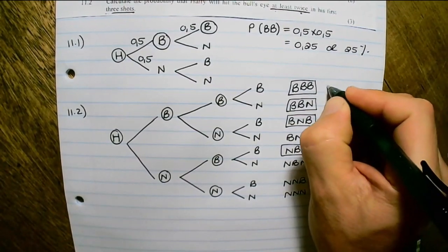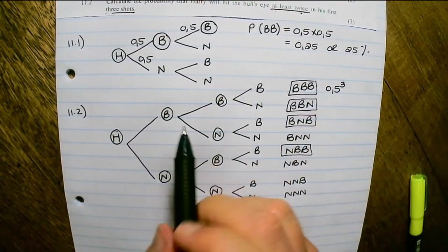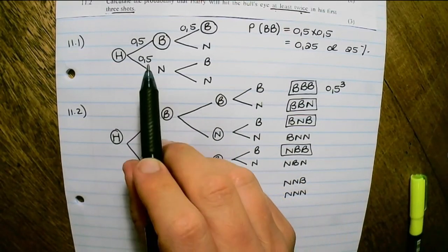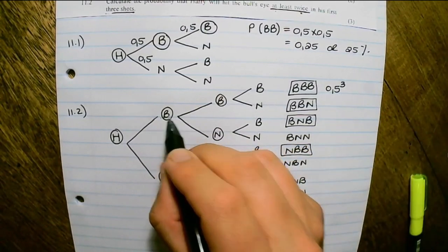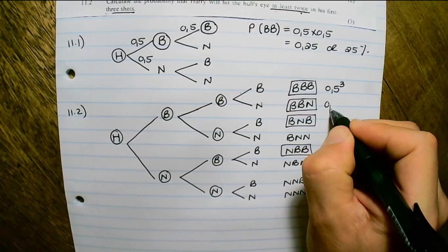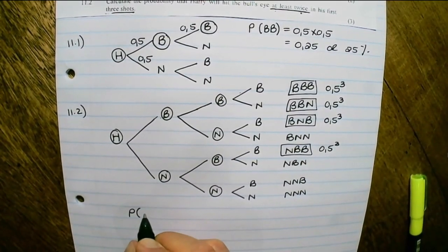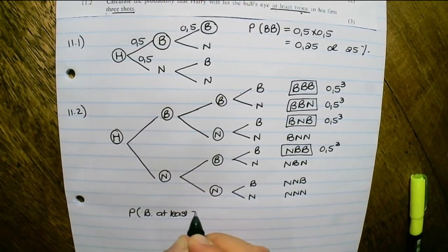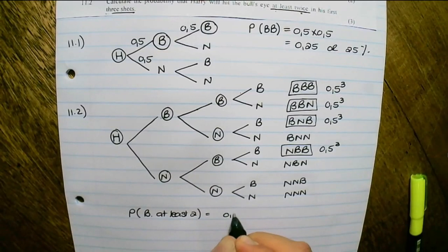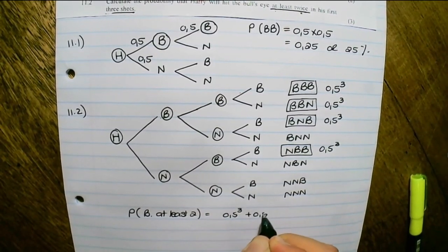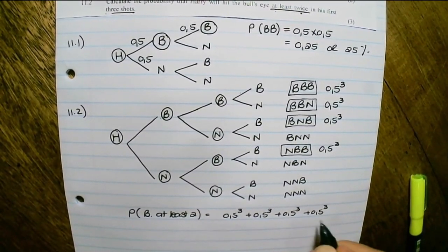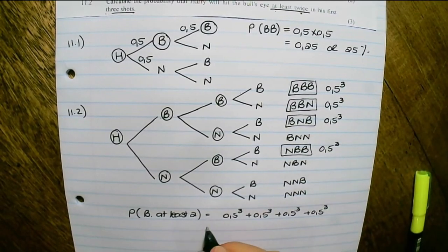Each option has probability 0.5 to the power of 3, because hitting or not hitting the bull's eye each has a 50% chance — so 0.5 times 0.5 times 0.5. Therefore, the probability of hitting the bull's eye at least twice is 4 times 0.5 cubed, representing our four possible options, which equals one half.